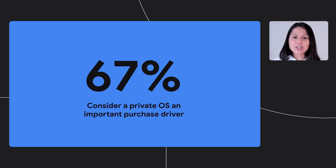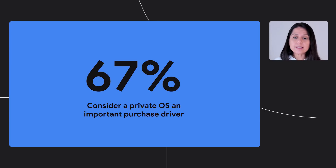Keeping users in control of their privacy and safeguarding everything they do online is more important than ever before, particularly when it comes to the mobile operating system. Our users want an operating system they can trust with their most personal and sensitive information. They want peace of mind that their smartphone not only brings them convenience, but also protects them from harm. Creating a safe ecosystem is a shared responsibility between all of us.